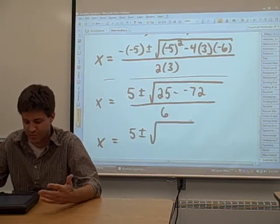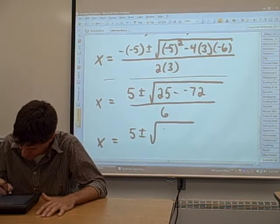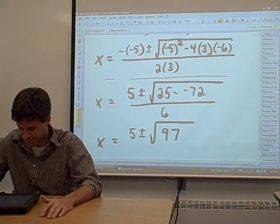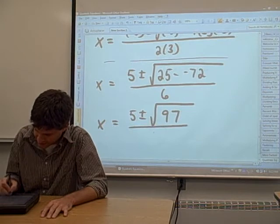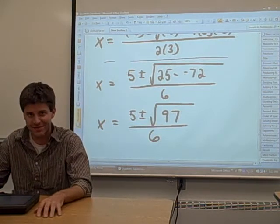So that's 25 plus 72, which, what is that? Is that 97? I think it's 97. Copy down the 6, and this is our answer. It looks a little bit funny.